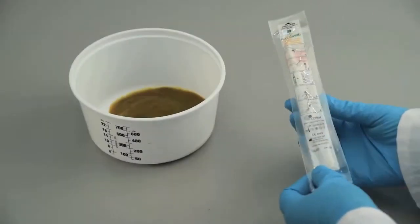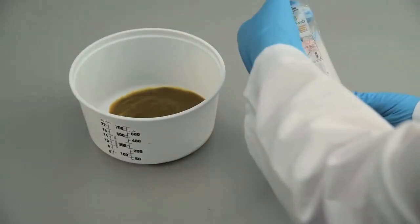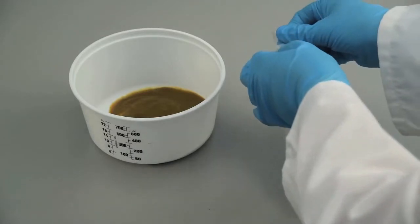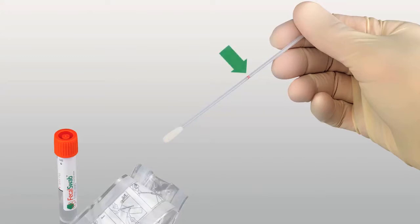Open the peel pouch and remove the tube and the flocked swab applicator. Do not touch the swab tip. Always hold the shaft applicator above the marked break point.